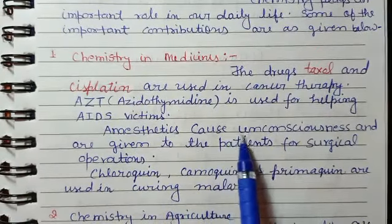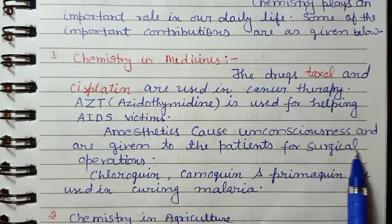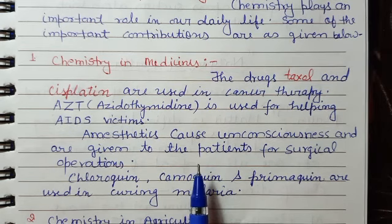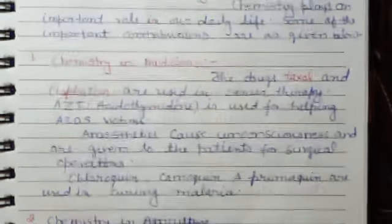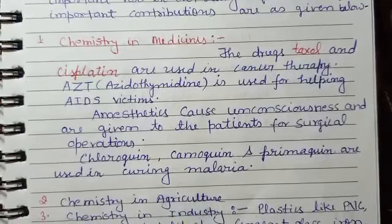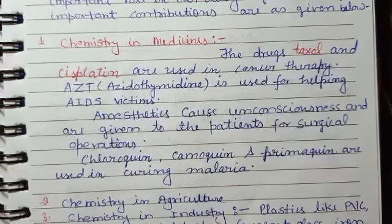Anesthesia causes unconsciousness and is given to the patient for surgical operations. In an operation, the patient is injected with anesthesia, due to which the entire body becomes unconscious. This is why doctors can perform operations effectively. Anesthesia plays a very important role in both major and minor operations — a very important use of chemistry.